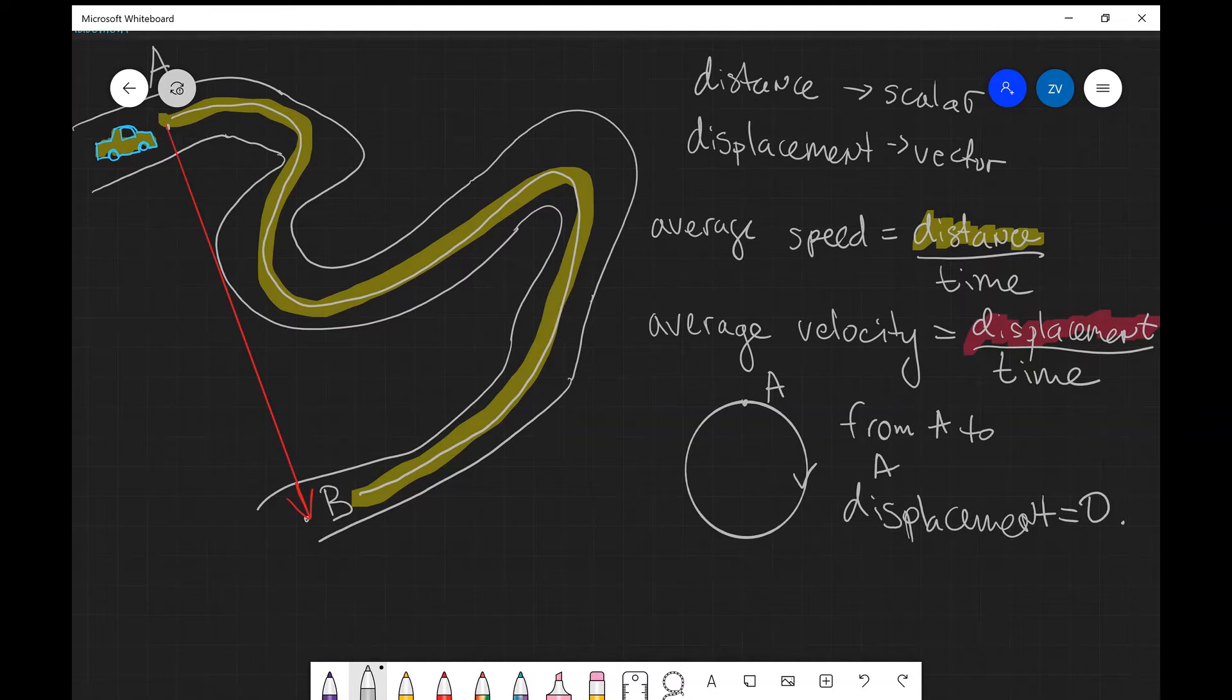The distance traveled though if it makes one full lap is going to be 2πr. So this is just a tricky point to watch out for.